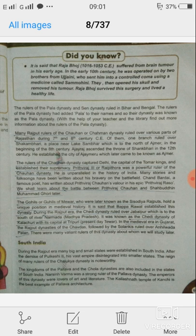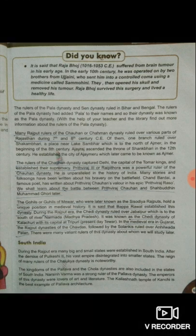The Rashtrakutas came to power in South India with the fall of the Chalukya dynasty. Rashtrakuta means head of the state or area. It is believed that the founder of the dynasty was an officer of that community, and the dynasty was named after him. Among many rulers, Govind III was the most powerful king. He established a powerful kingdom in the Deccan.